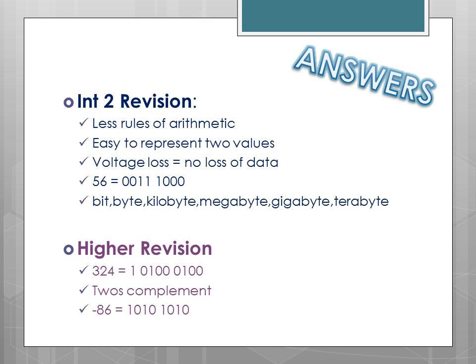Higher questions: 324 in binary is 101000100. The name given to the system used to represent negative numbers is 2's complement. And minus 86 in binary using 2's complement notation is 10101010.